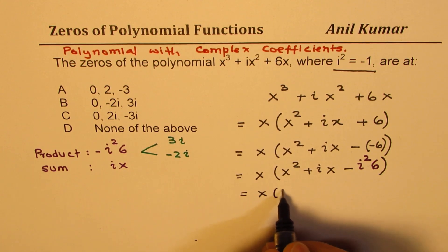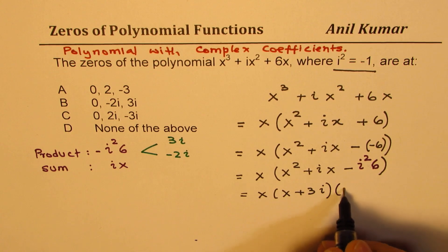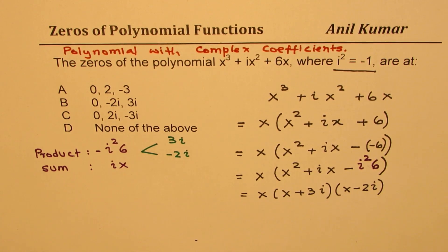Using these numbers we could now factor this as x times (x + 3i) times (x - 2i). You can always verify by expanding and checking whether it really works or not.